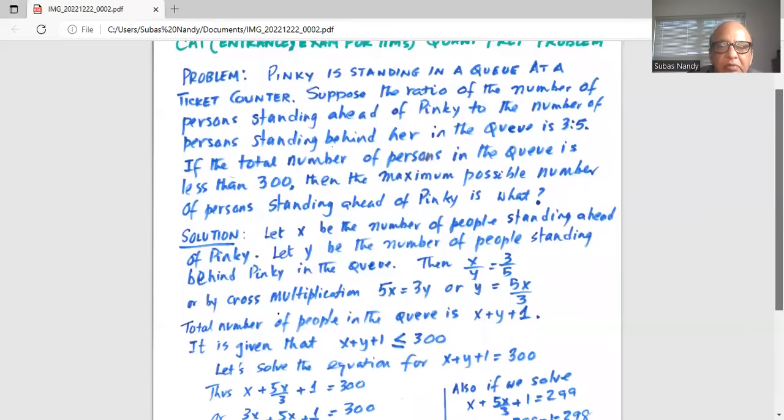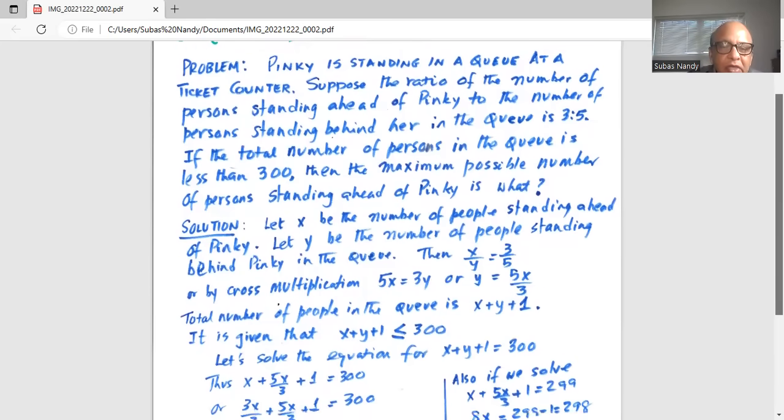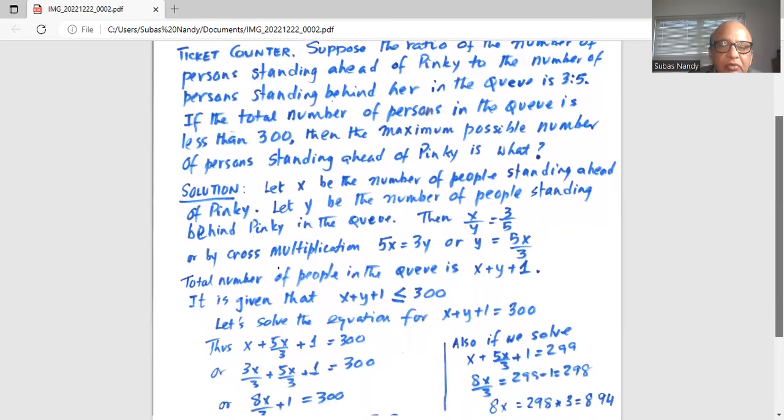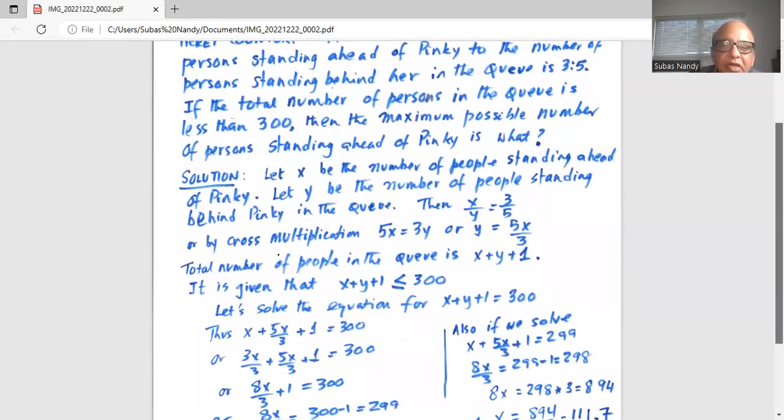So total number of people in the queue is x in front of Pinky, y behind Pinky, so x plus y plus 1 for Pinky. So total number is x plus y plus 1. It is given that x plus y plus 1 is less than or equal to 300.